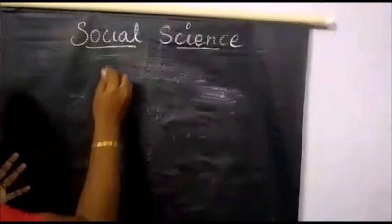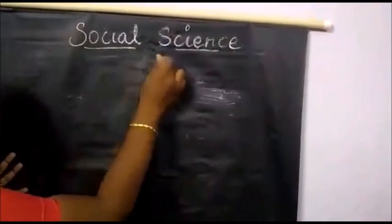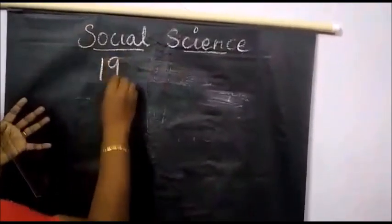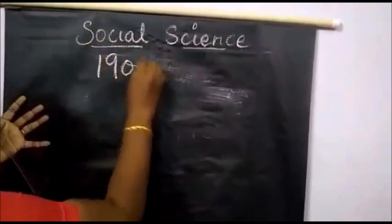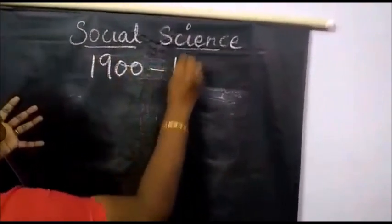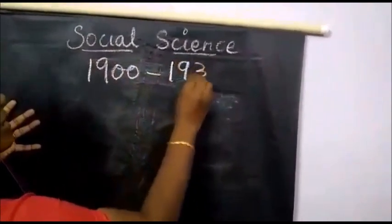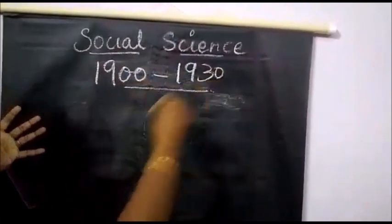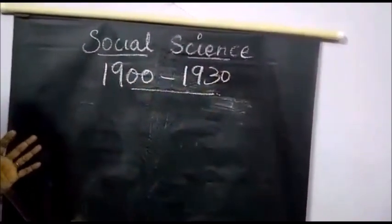First tip: write 'timeline' here on the top. For example, write the time range such as 1900 to 1930.